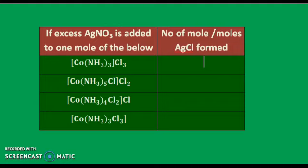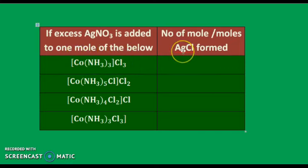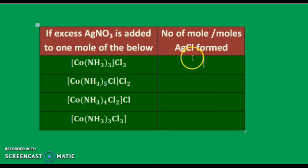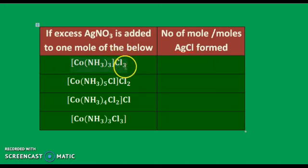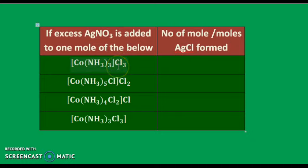Let's apply this theory. In this compound, if silver nitrate is added, silver chloride precipitate forms. But the question is: how many moles of AgCl will precipitate? We can see that the 3 Cl⁻ ions act as counter ions. These 3 Cl⁻ ions satisfy Co's primary valency, so they dissociate and 3 moles of AgCl are formed.